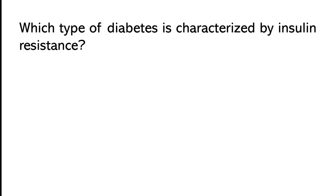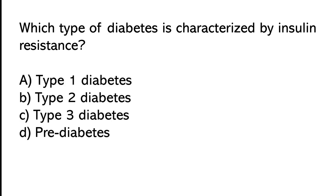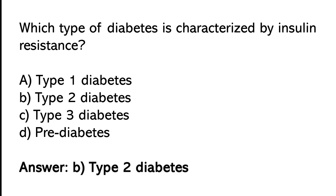Which type of diabetes is characterized by insulin resistance? Type 1 diabetes, type 2 diabetes, type 3 diabetes, or gestational diabetes. The correct answer is option B — type 2 diabetes.